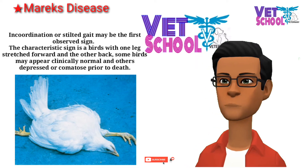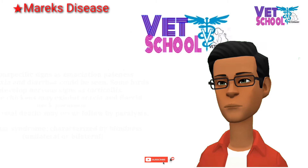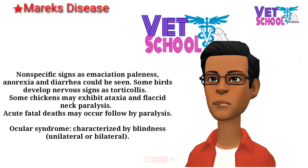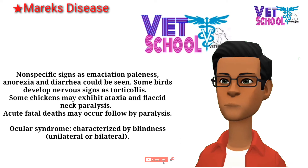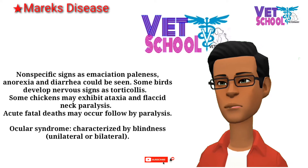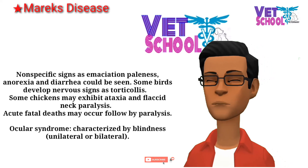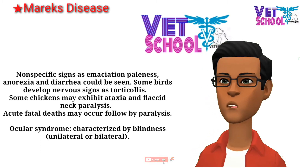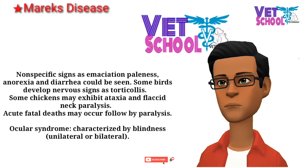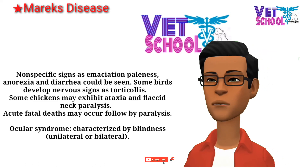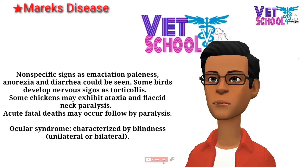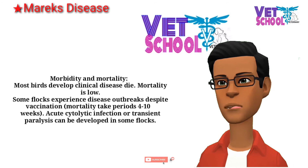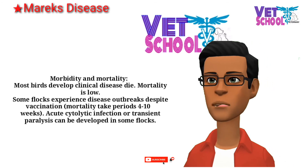The characteristic sign is birds with one leg stretched forward and the other back. Some birds may appear clinically normal, and others depressed or comatose prior to death. Non-specific signs such as emaciation, paleness, anorexia, and diarrhea can also be seen. Some birds develop nervous signs such as torticollis, and some chickens may exhibit ataxia and flaccid neck paralysis.